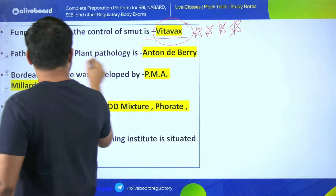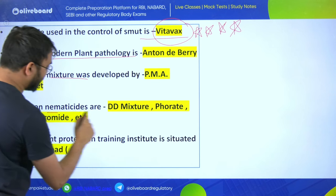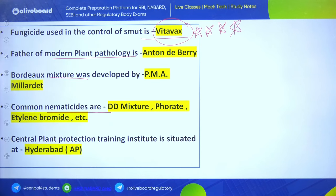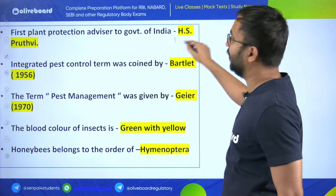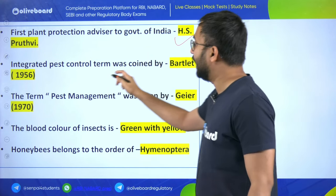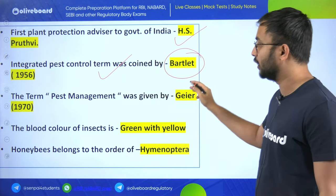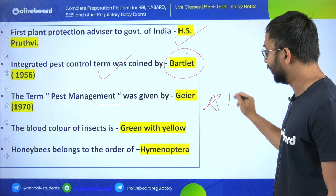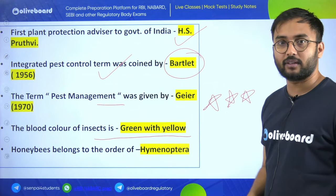Father of modern plant pathology is Anton de Bary. Bordeaux mixture was developed by P.M.A. Millardet. Common nematocides are DD mixture, Phorate, and Ethylene Bromide. Central Plant Protection Training Institute is situated at Hyderabad, Andhra Pradesh. The first plant protection advisory of the Government of India was given by H.S. Pruthi. The term integrated pest control was introduced by Bartlett. The term pest management was given by Geier.